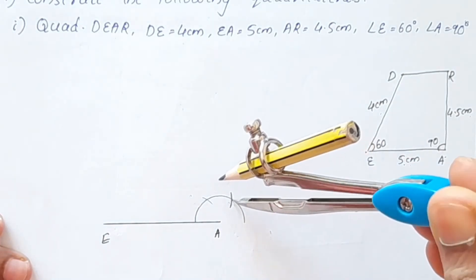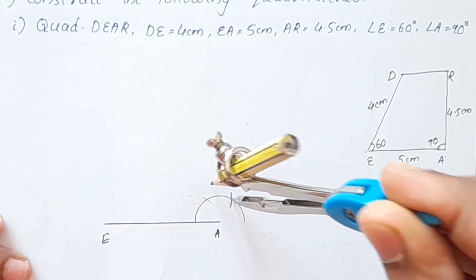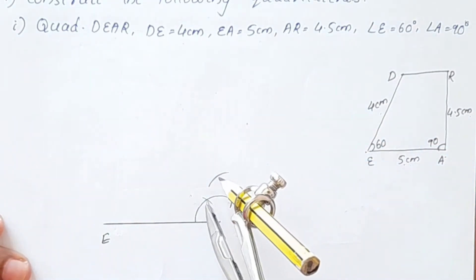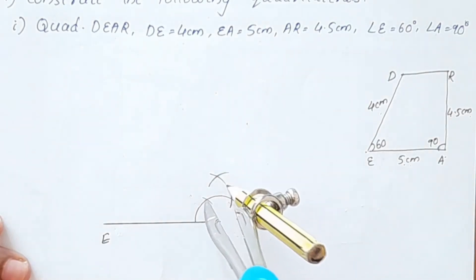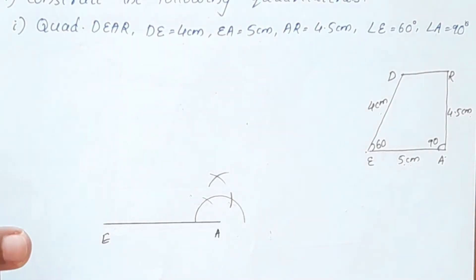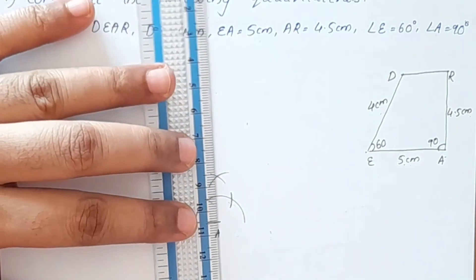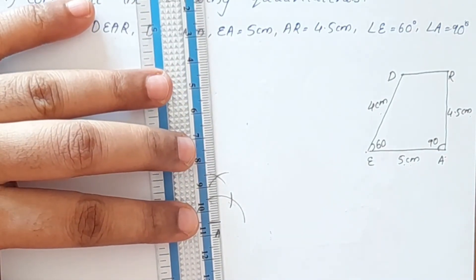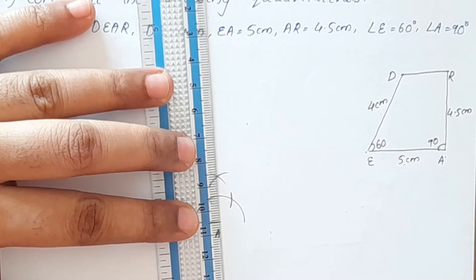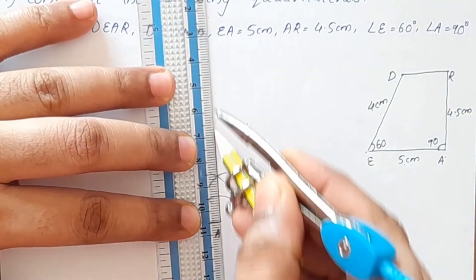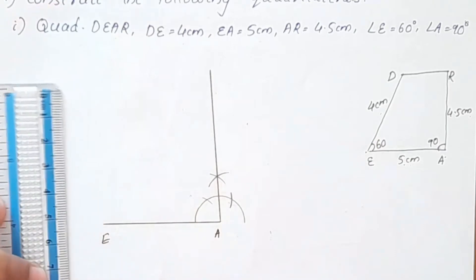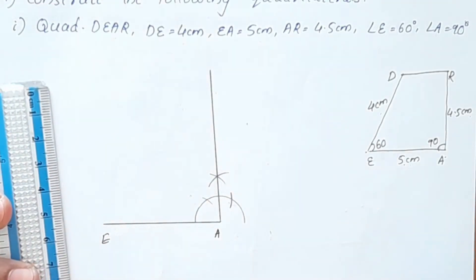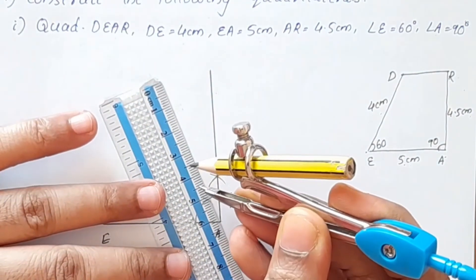We click one arc here and mark the point. The intersecting point gives us point A. The length AR is 4.5 cm.